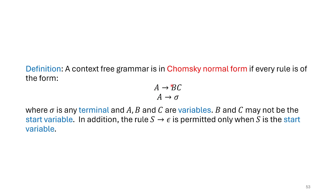The first rule says that any rule with variables on the right-hand side must have exactly two variables — B, C. That's the only way we're going to allow it; not three, not a single variable. Then when you have a terminal on the right-hand side, the only allowed form is a variable replaced by a single terminal. So we're going to update our rules so that they have these forms.